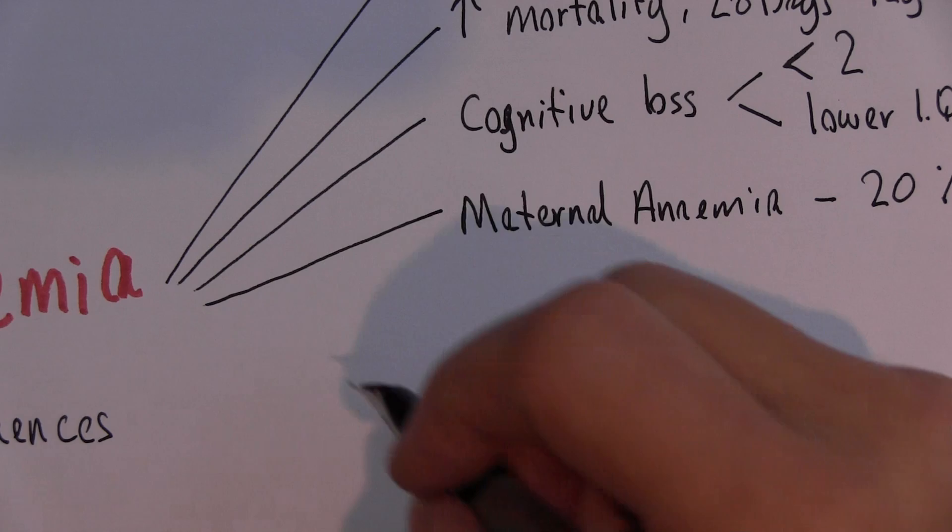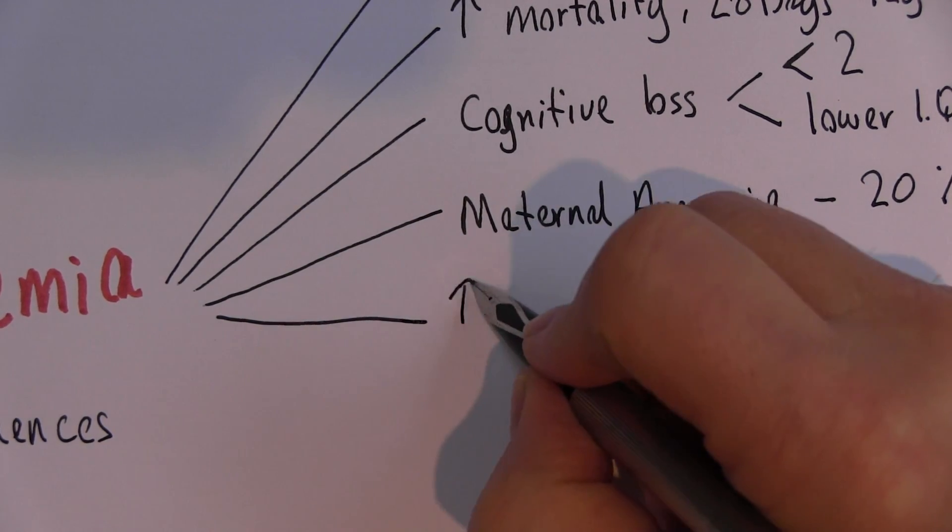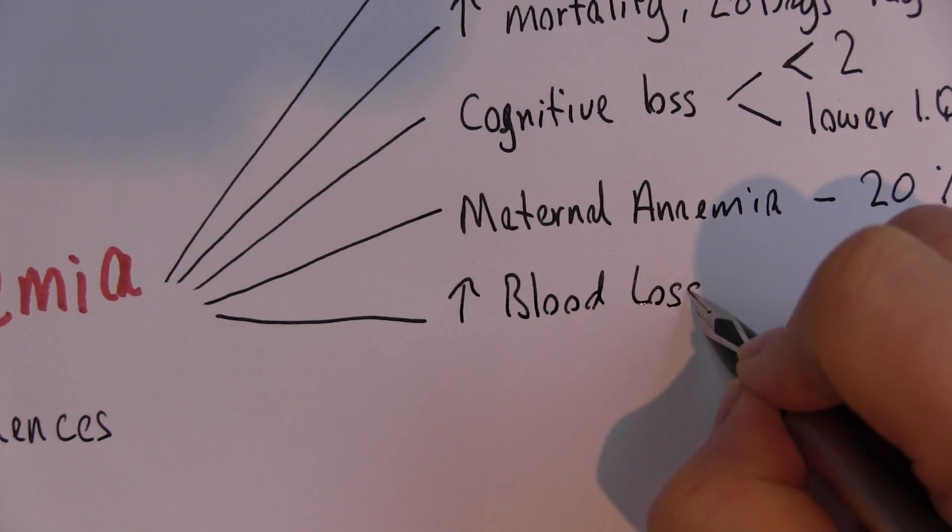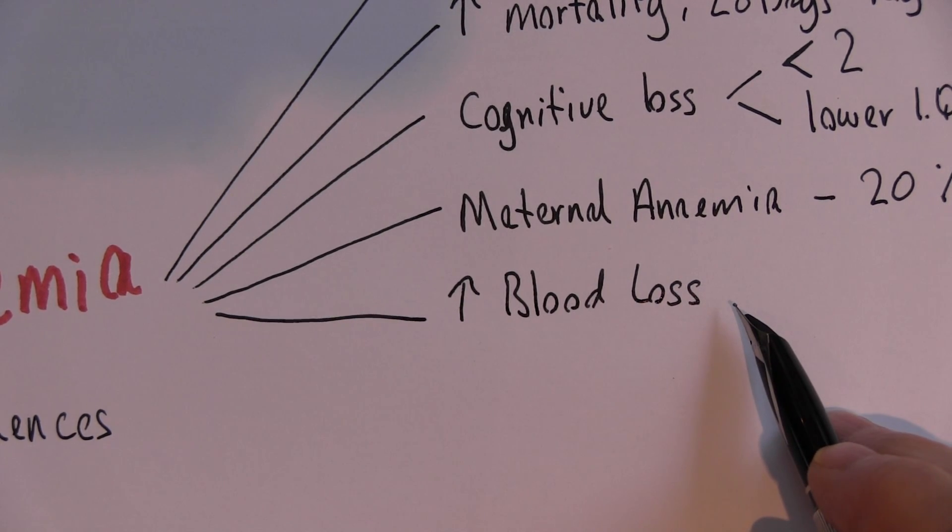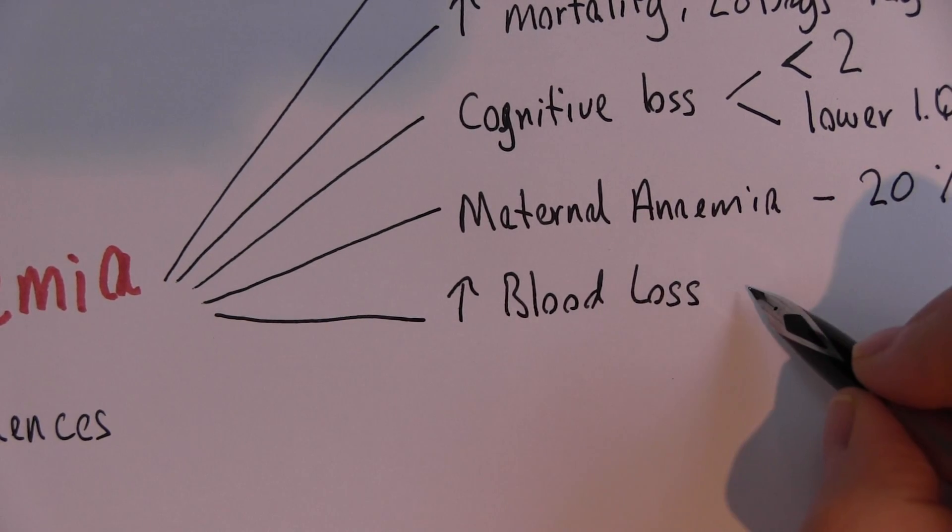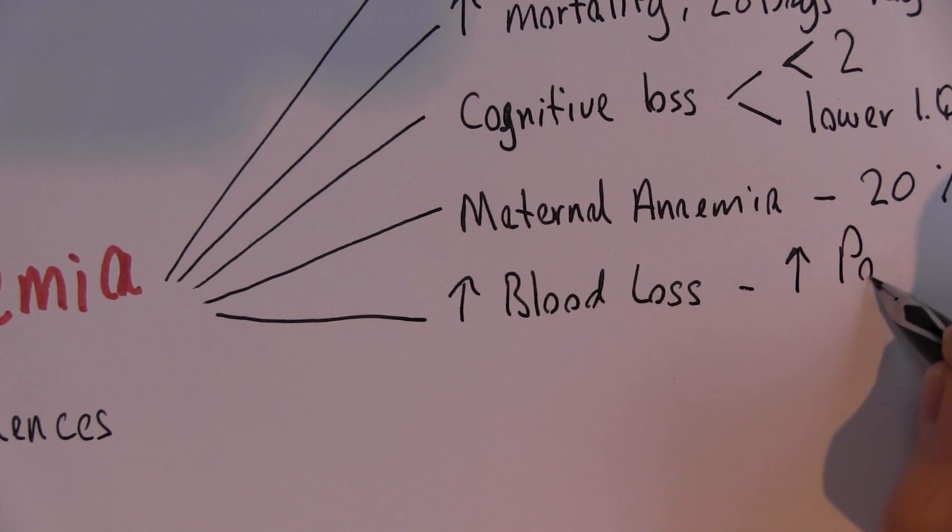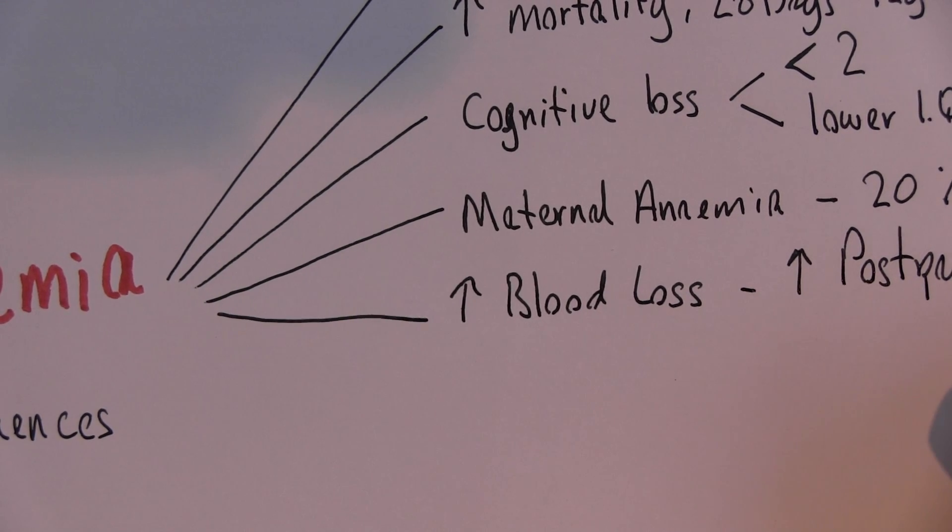Now as well as that, there's increased blood loss during delivery. So anemic mums are more likely to bleed during delivery, and there's an increase in the problem, in the incidence of postpartum hemorrhage.